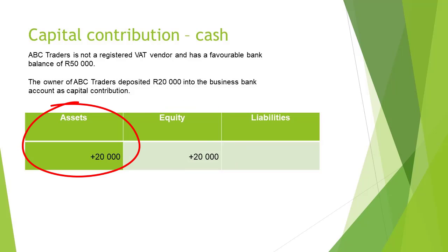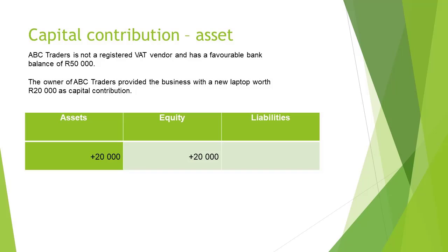The bank account has a favourable balance. Therefore, it will be classified as an asset. Assets will increase with 20,000 rand. Bank will be debited with 20,000 rand.